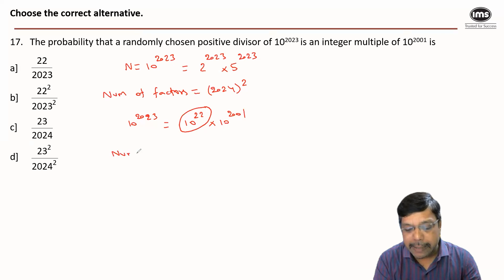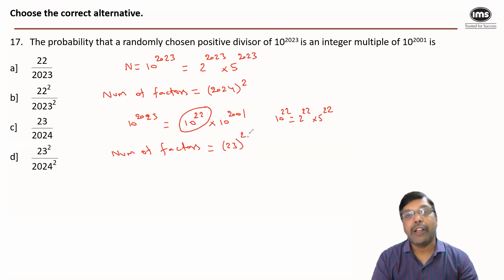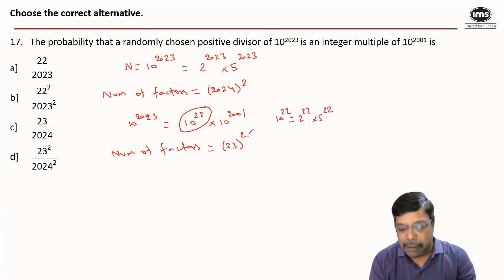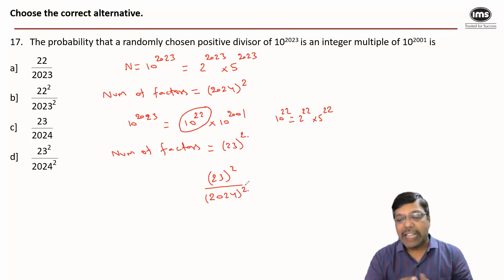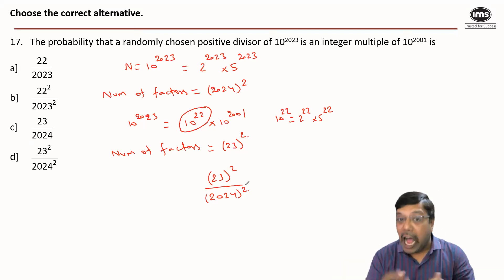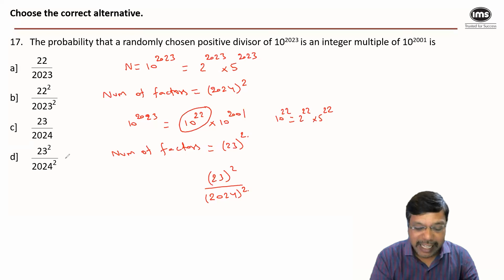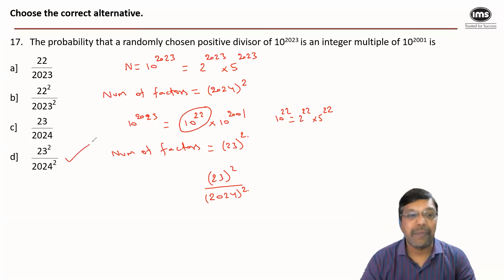The number of factors for 10^22 — since 10^22 = 2^22 × 5^22 — will be 23 squared. So the probability being asked is 23² / 2024². The total number of factors for 10^2023 is 2024², out of which the number of factors that are integer multiples of 10^2001 is 23². Hence the required probability is 23²/2024². Answer option D.